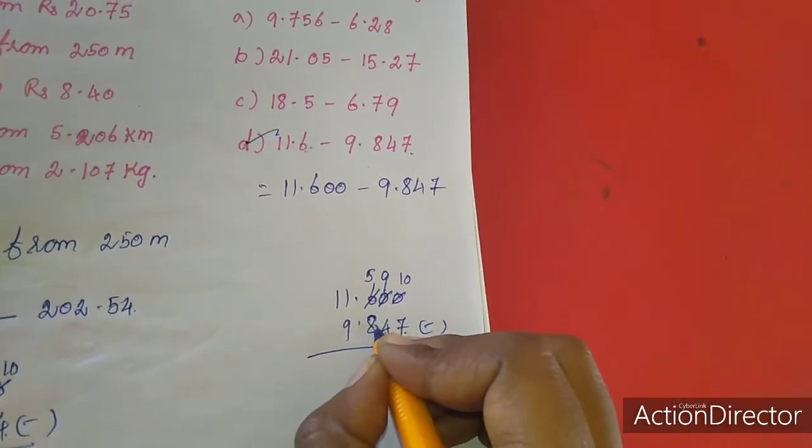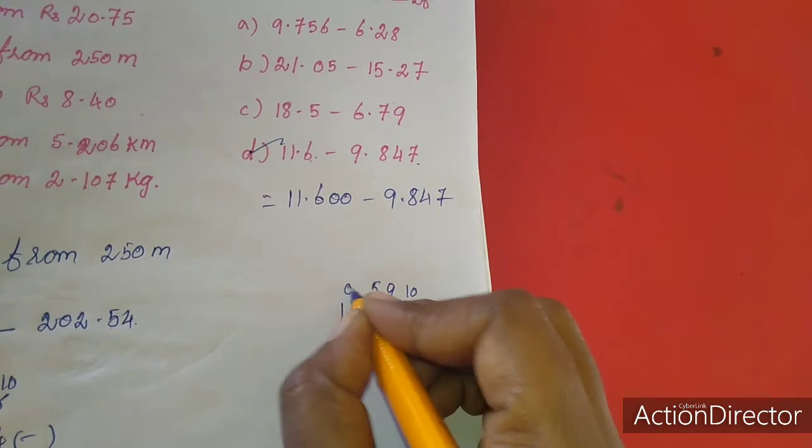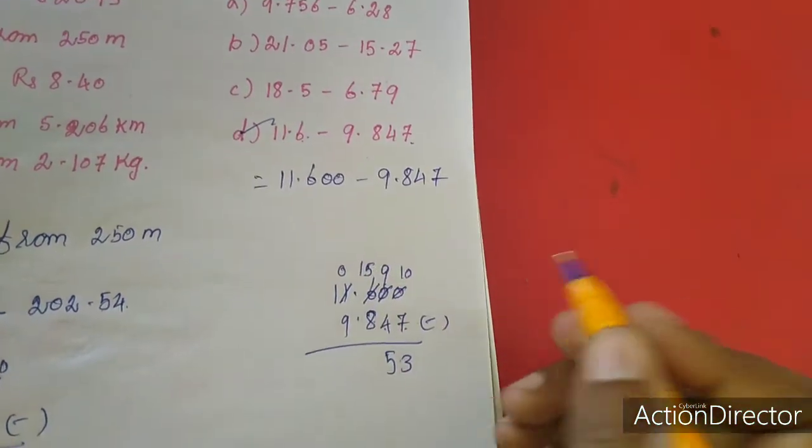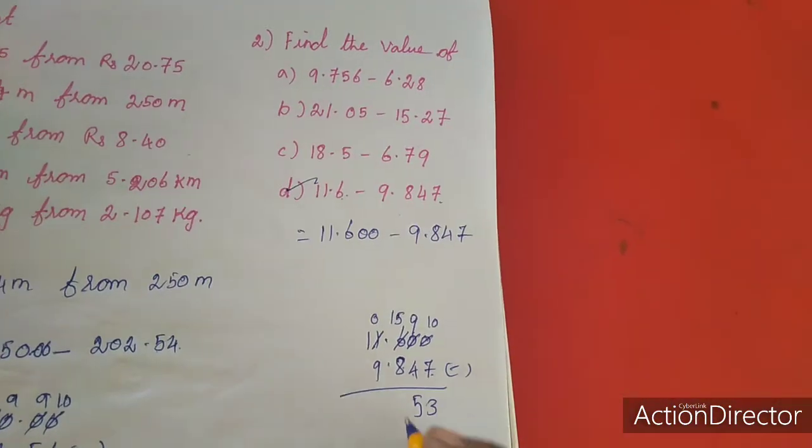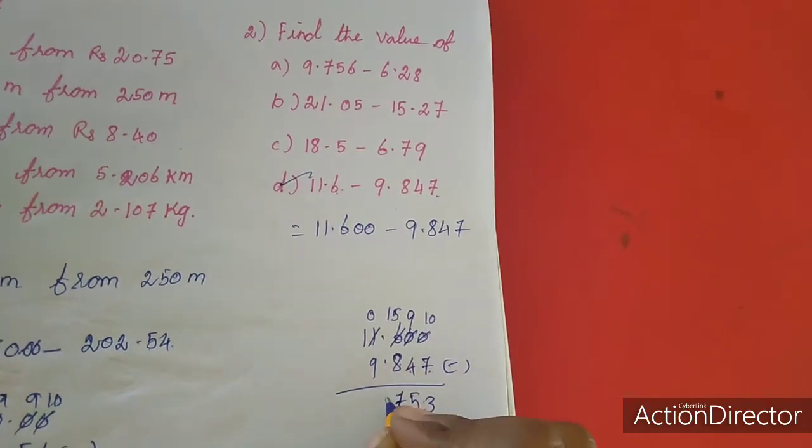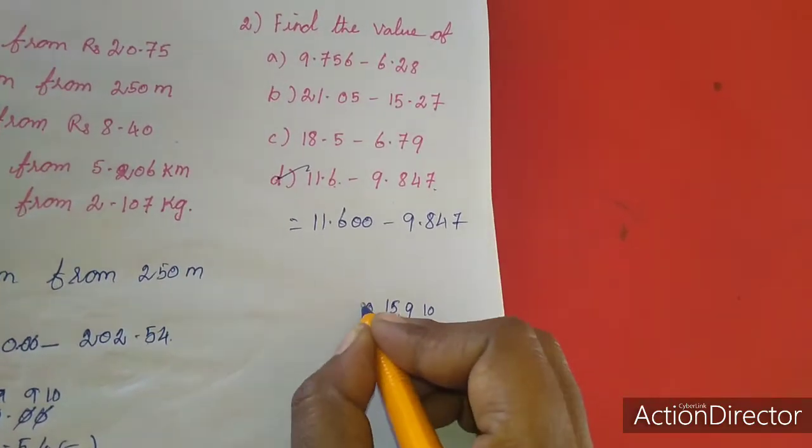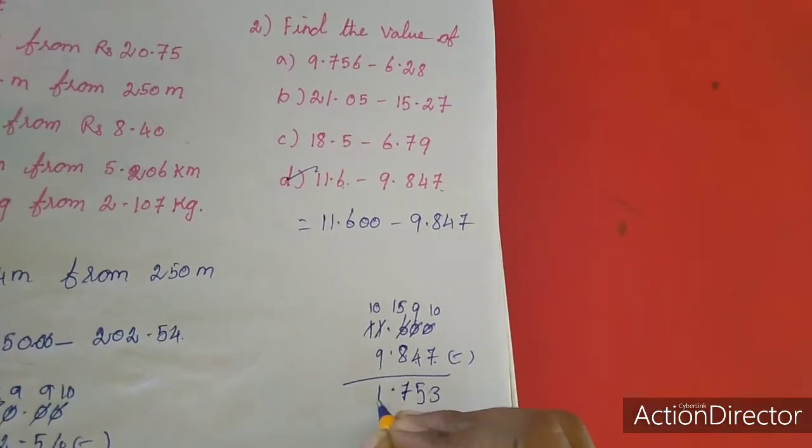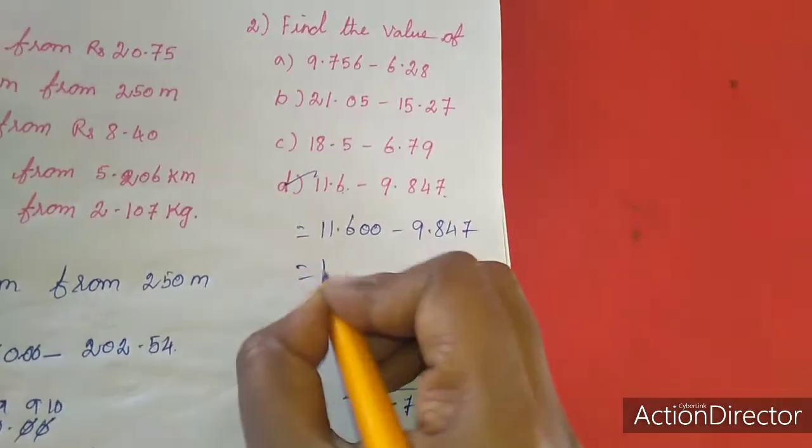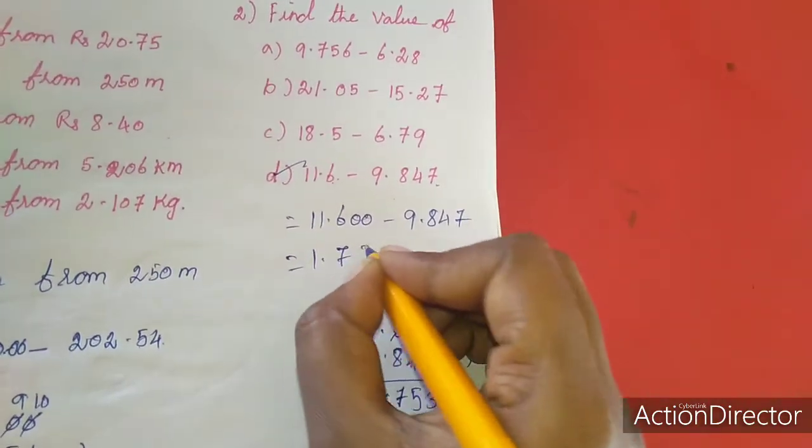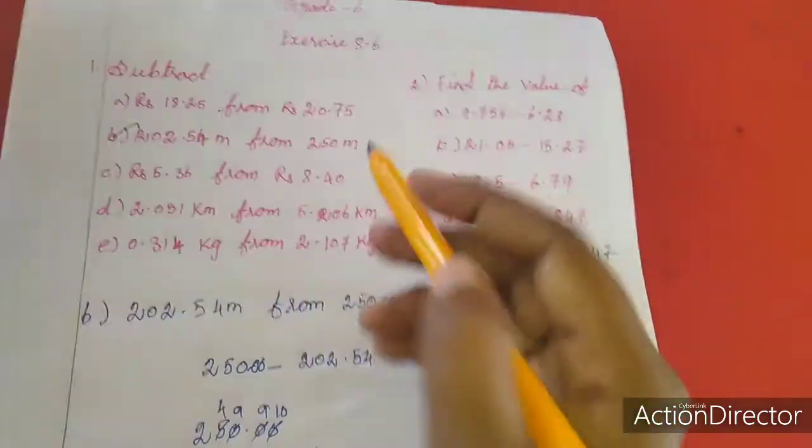5 minus 8 will not be possible, so I am getting borrow. Here will become 0, here 15. 15 minus 8 is 7. 7, this dot. Here also I want to get borrow, that means 10. 10 minus 9 is 1. So the answer is 1.753. This is the answer. Balance sums is homework for you, balance sums 1, 2, 3, 4, 5, 6, 7, seven sums is homework for you.